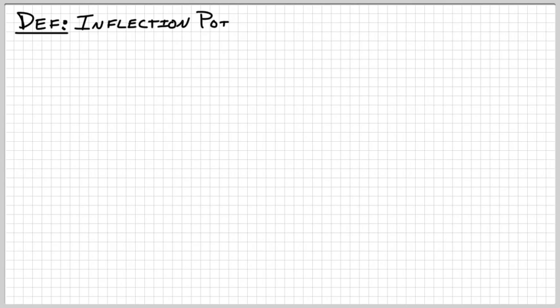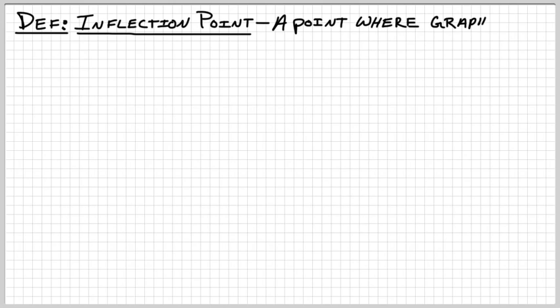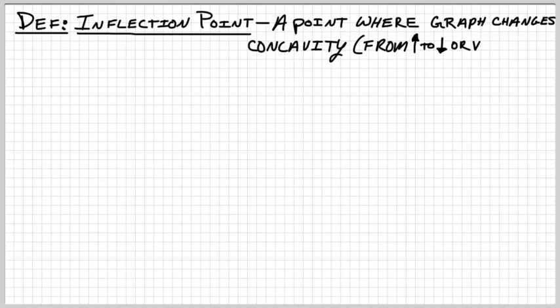Let's give a brief definition for inflection point: that's just a point where the graph changes concavity. So it could go from concave up to concave down or vice versa — that's the point where the graph changes concavity.